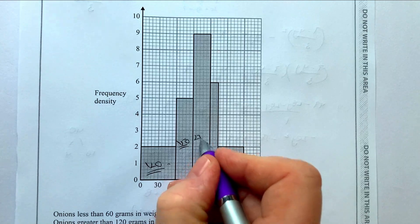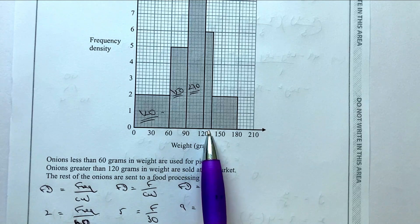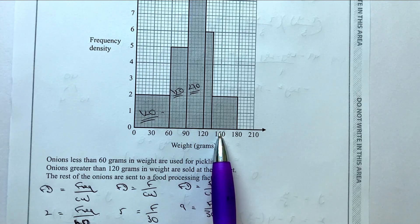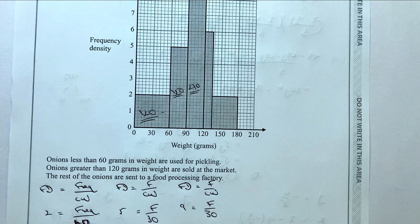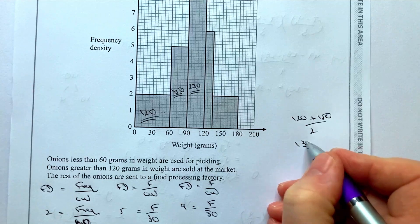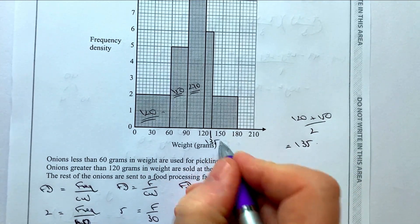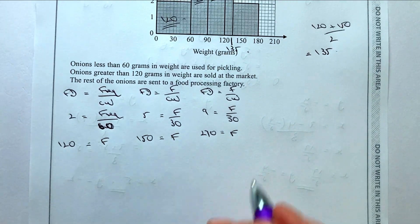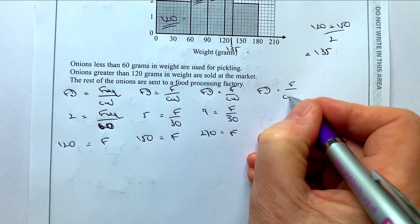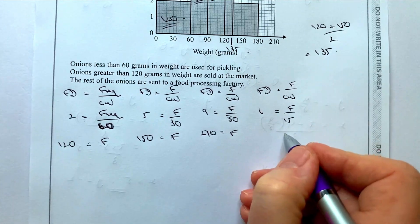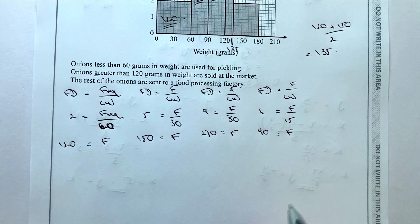The only slight complication is we need to find the class width of the fourth block. It's halfway between 120 and 150: (120 + 150) ÷ 2 = 135. So that boundary is 135. For that block the frequency density is 6, class width is 15, so: 6 = frequency ÷ 15, giving a frequency of 90.